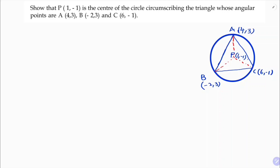If I can prove that PA, PB, and PC distances are all equal, then the problem is done. Circumscribing means from the center, all three vertices will be at equal distance — each equal to the radius. So first I'll find the PA distance.